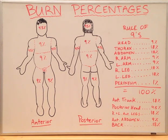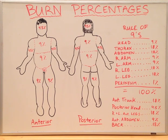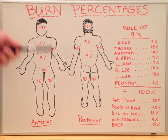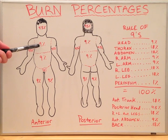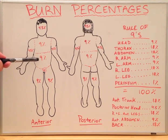As you can see from this diagram, most of the body parts in total have a percentage of the body which is a multiple of nine. We will go through these right now. As you can see from the anterior aspect of the human body, the head constitutes 4.5%, the thorax 9%, the abdomen 9%.